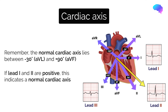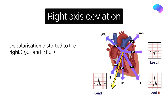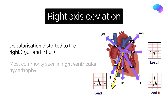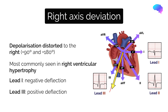Now we understand the normal cardiac axis, let's move on and look at when this is abnormal. Right axis deviation involves the direction of depolarisation being distorted to the right, meaning it ends up between plus 90 degrees and plus 180 degrees on the cardiac axis. The most common cause of right axis deviation is right ventricular hypertrophy. Extra right ventricular tissue results in a stronger electrical signal being generated by the right side of the heart, causing the deflection in lead 1 to become negative and the deflection in leads AVF and lead 3 to be more positive. Right axis deviation is commonly associated with conditions which result in the development of right ventricular hypertrophy, such as pulmonary hypertension.